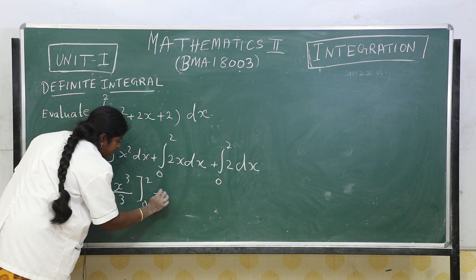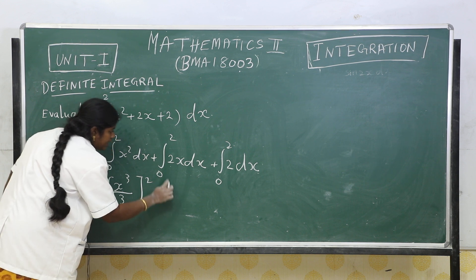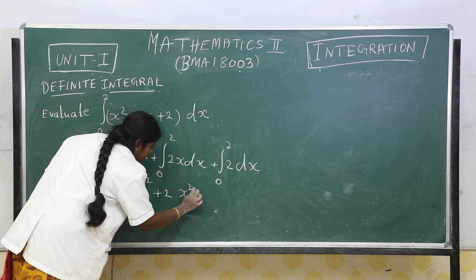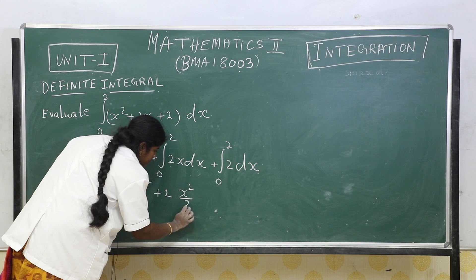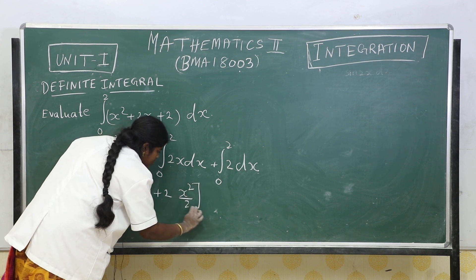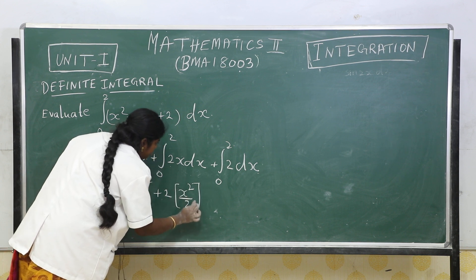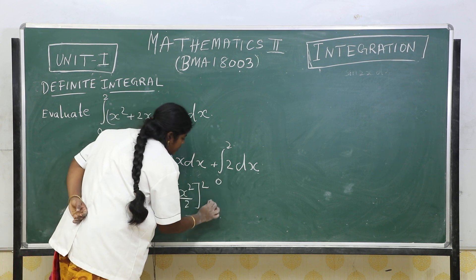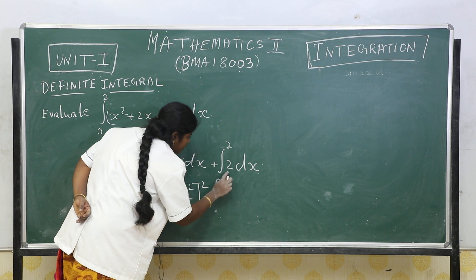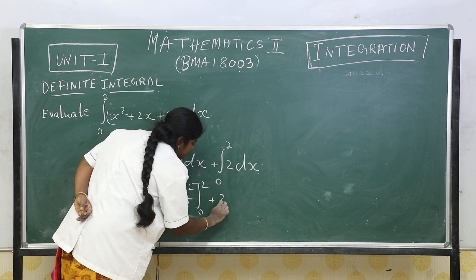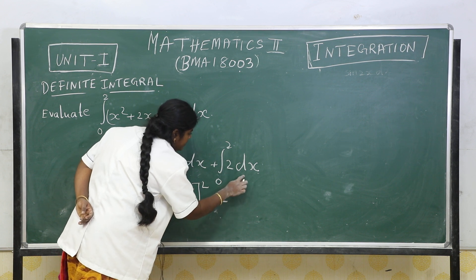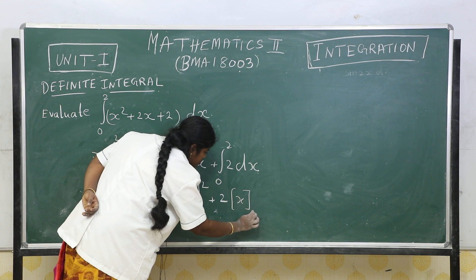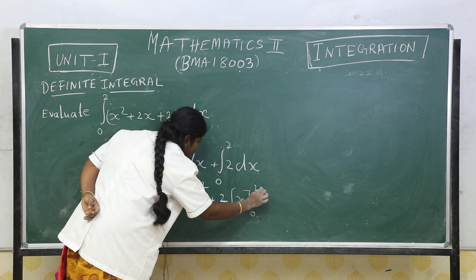Since 2 is a constant, the integration of x dx equals x squared by 2, with integral limit 0 to 2. The integration of the constant 2 dx equals x, with integral limit 0 to 2.